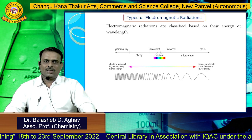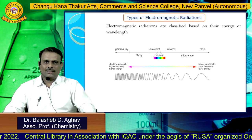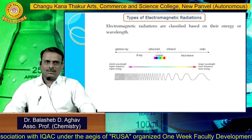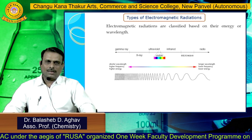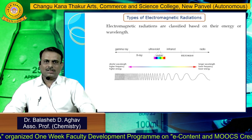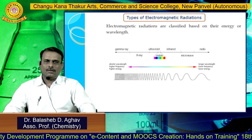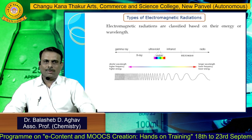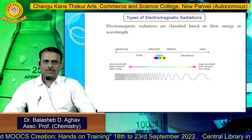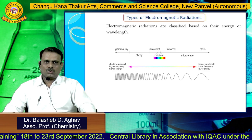Spectroscopy deals with the interaction of molecules with electromagnetic radiation. Electromagnetic radiations are classified based on either energy or wavelength. In spectroscopic techniques we use ultraviolet and visible radiation for UV-visible spectroscopy, IR radiation in IR spectroscopy, and radio wave radiation in PMR or NMR spectroscopy.